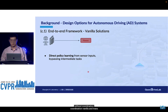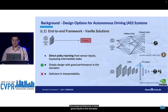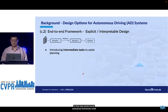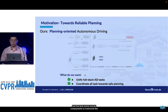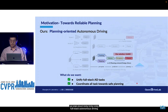The end-to-end solution learns a policy directly from sensor inputs, bypassing the intermediate tasks. These simple architectures have good results in the simulator, but they lack interpretability in real-world scenarios. Some other work introduces intermediate tasks to assist planning and improve interpretability, but they lack some crucial components. To overcome the defects of previous work, we established UniAD — unified full-stack autonomous driving tasks — and coordinate all tasks towards safe planning.